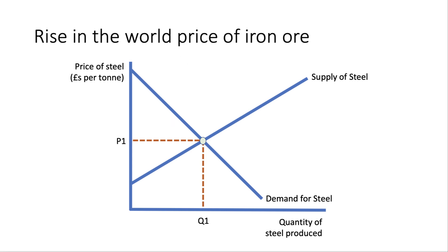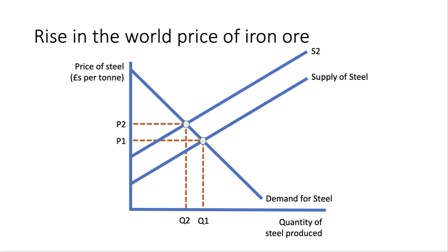Second example: a rise in the world price of iron ore. Iron ore is an input used in production, so an increase in its world price lifts the costs of steel producers. Therefore supply of steel shifts to the left to S2, and with a given level of demand that causes the price to go up while quantity contracts from Q1 to Q2.